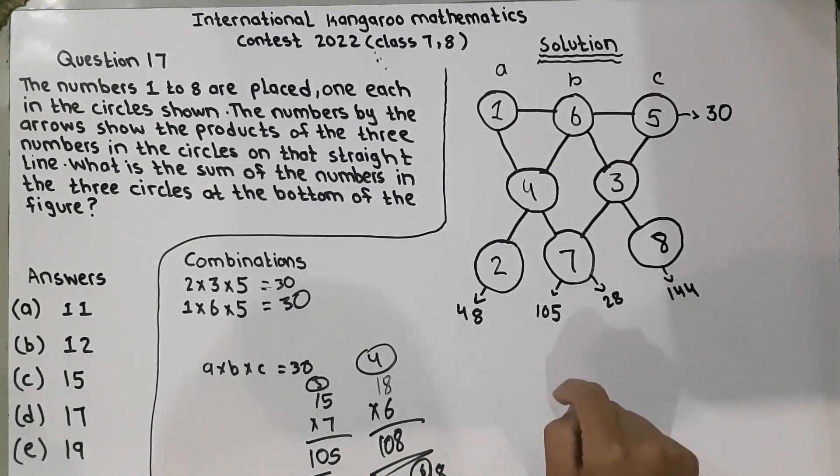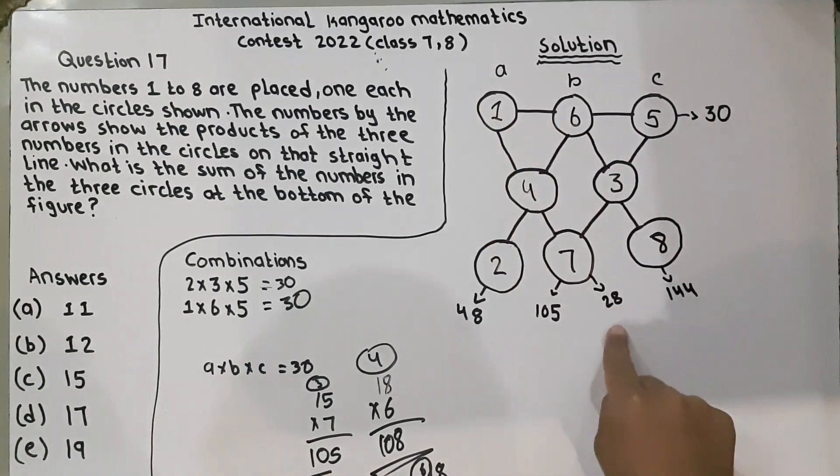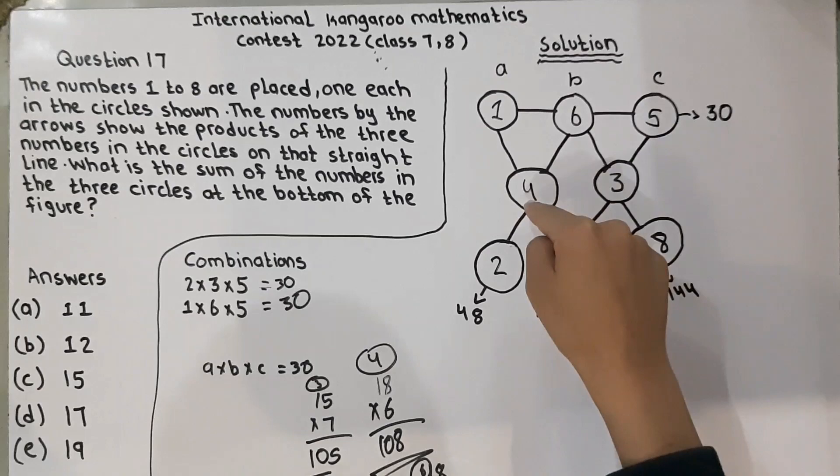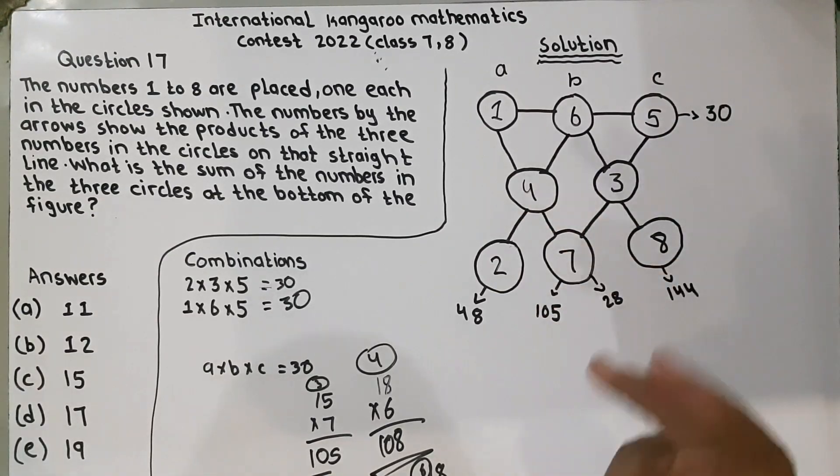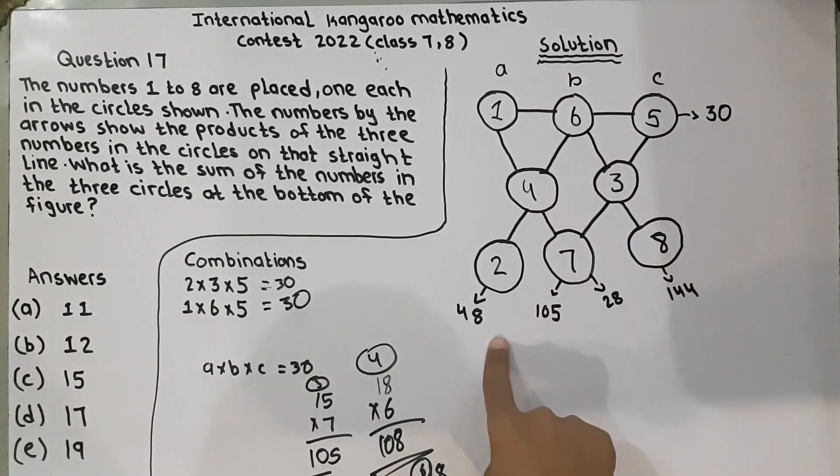And, let's check whether we have solved it right or not. 7 times 4 is 28. 28 times 1 is 28. There, here. 6 times 4 is 24. 6 times 4 is 28. 28 times 2 is 48. Okay.